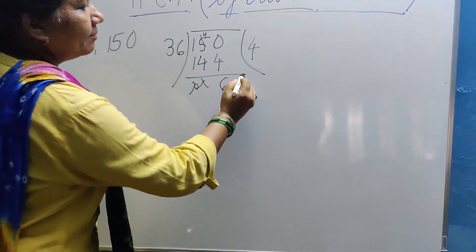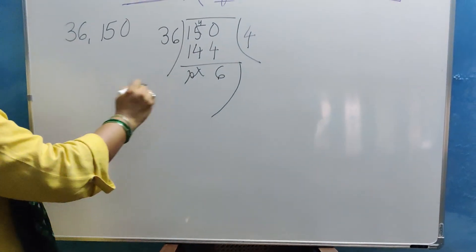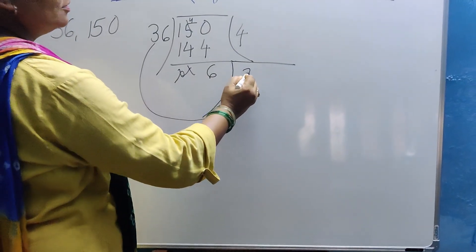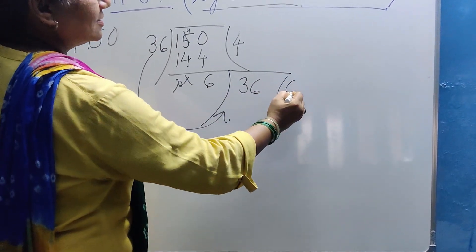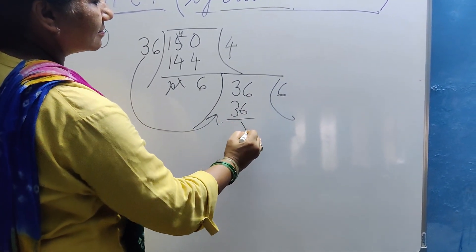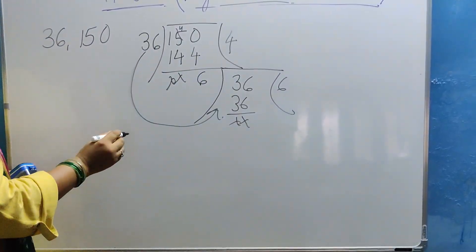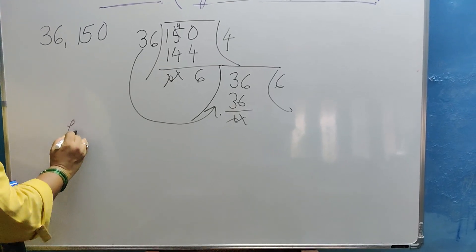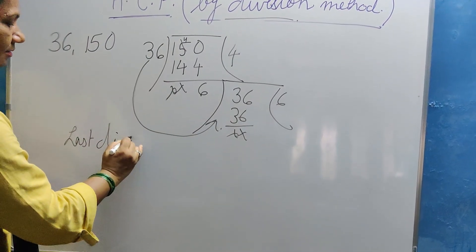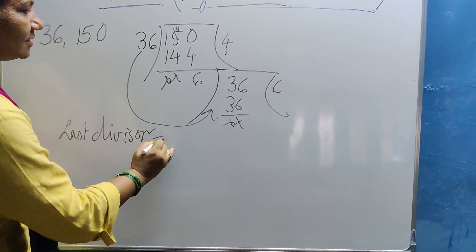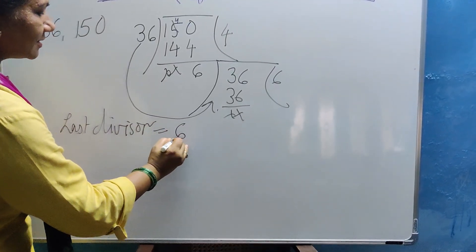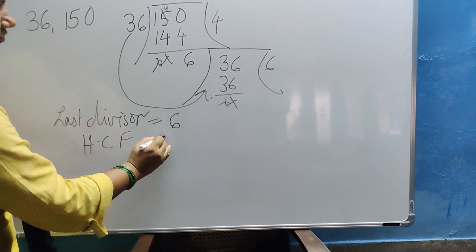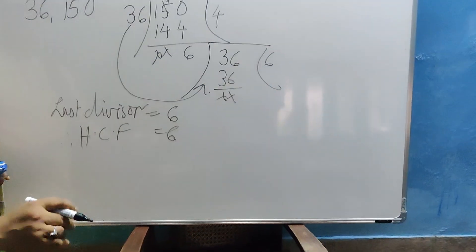Now 6 will become what? The divisor. And what will become the dividend then? This 36 has to come here. So 36. Now 6 sixes are 36. Now which is the last divisor? We have to be focused on the last divisor. What is the last divisor here? The last divisor is 6. And therefore, what is the HCF? HCF is also 6.